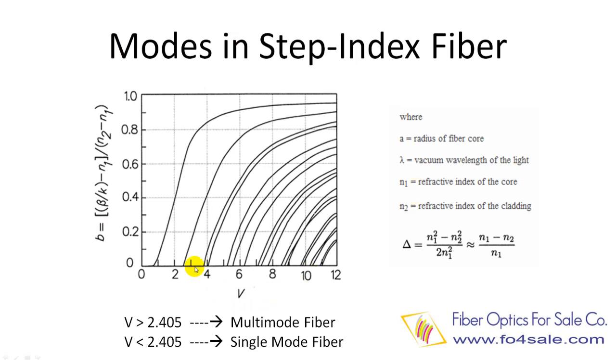Here is a V number graph for a step index fiber. I am only showing the conclusion here without any mathematical steps. The lines in the graph are different modes. V number is determined by the construction of the fiber, such as its core radius, the light wavelength, the core refractive index, the cladding refractive index, and so on.